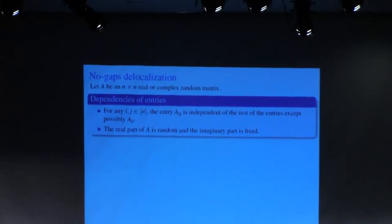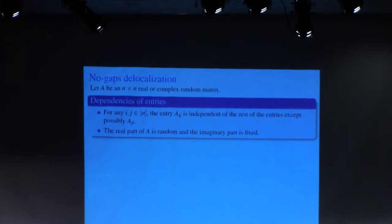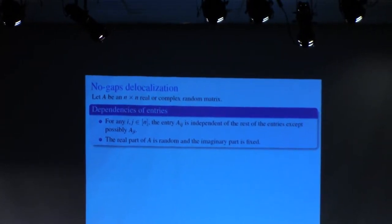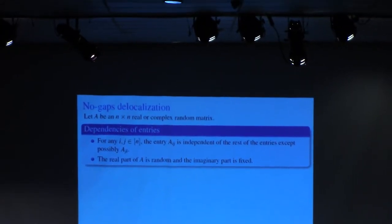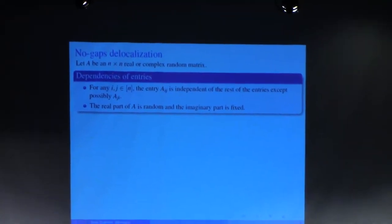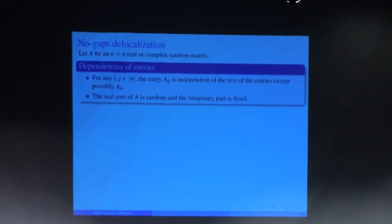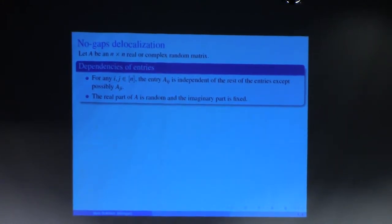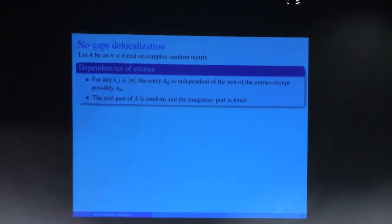The second assumption is that the real parts of entries are random and the imaginary parts are deterministic. Although this sounds not completely natural, it is intended to include two most natural classes: one is real matrices, where the imaginary part is just zero, and another is complex matrices with an imaginary part independent of the real part. In that case, we would condition on the imaginary part.